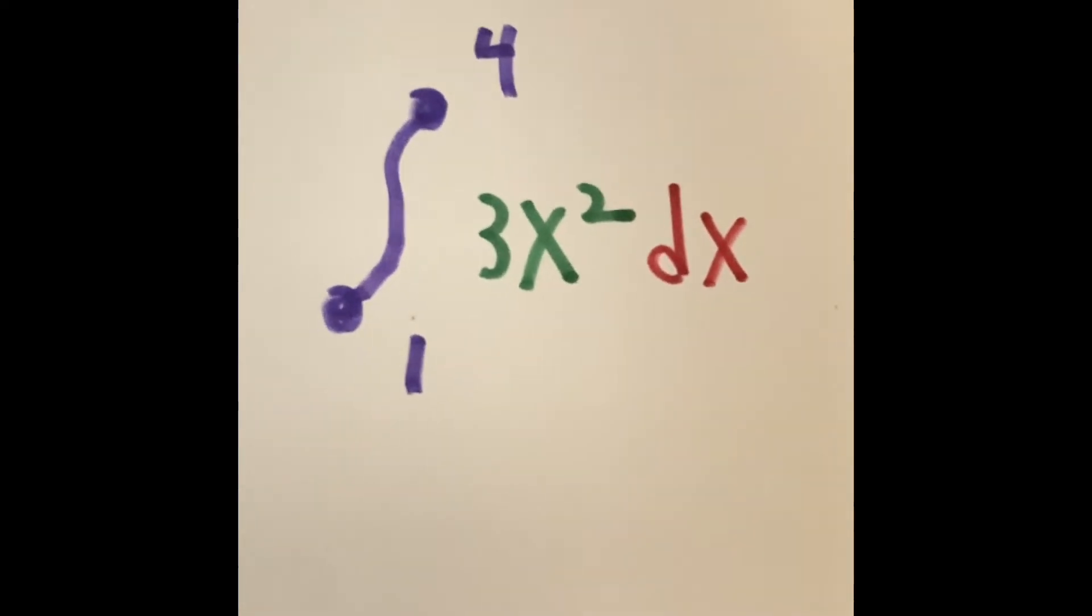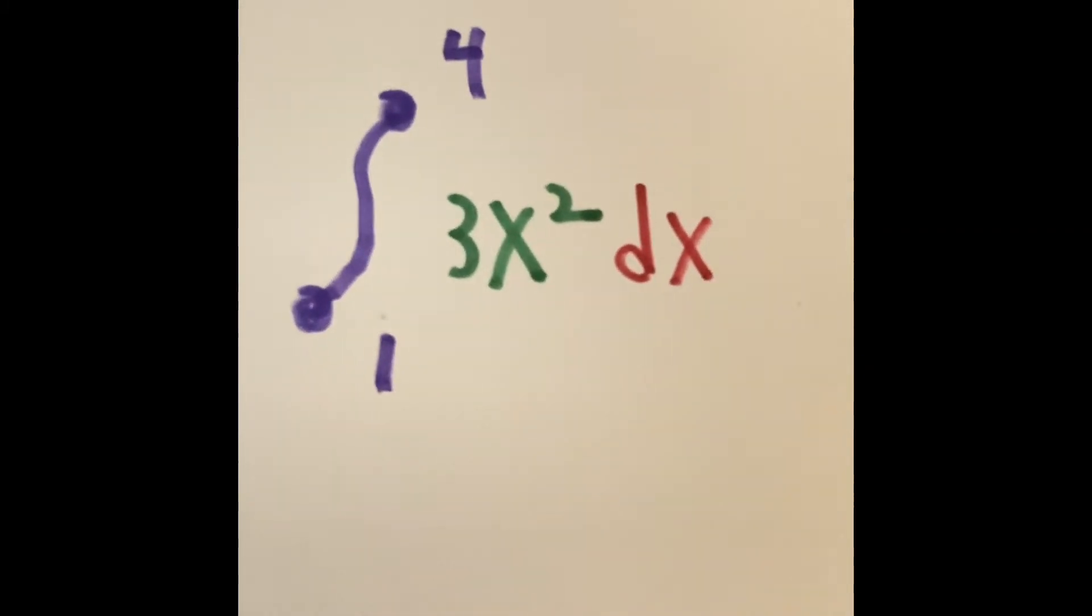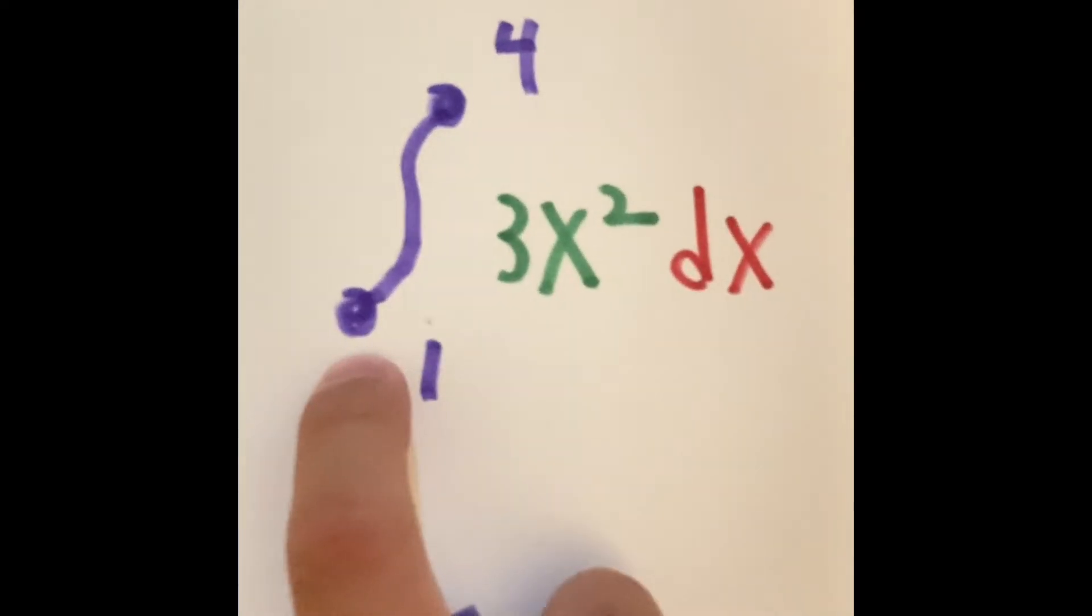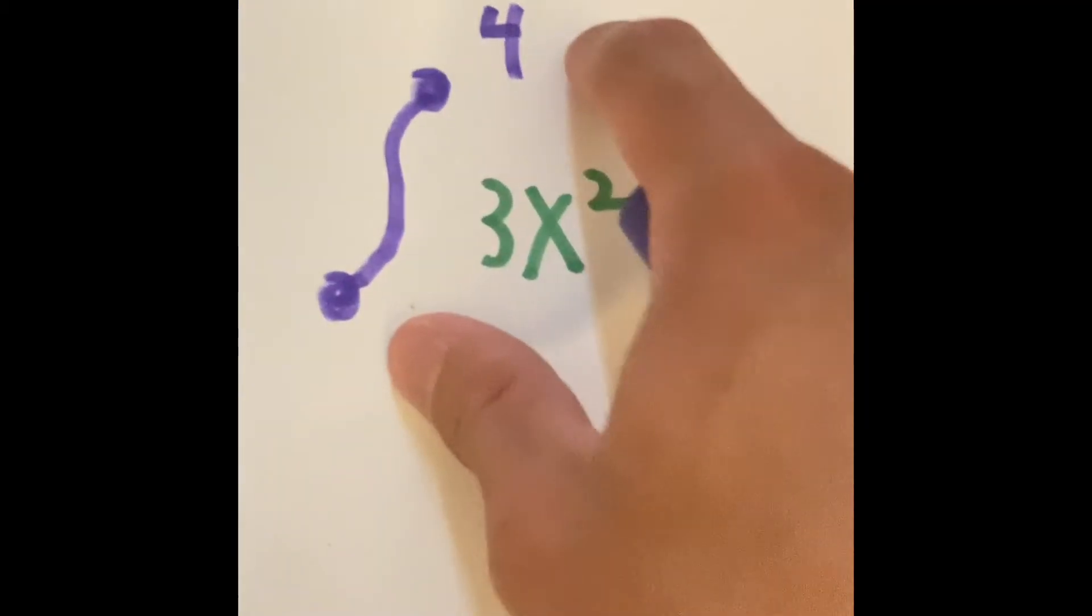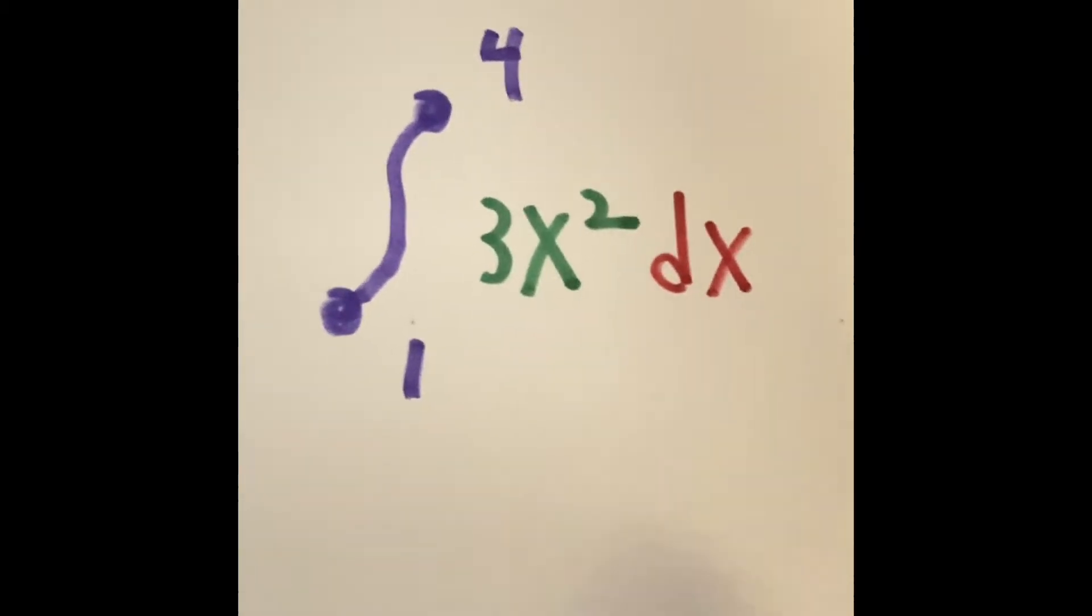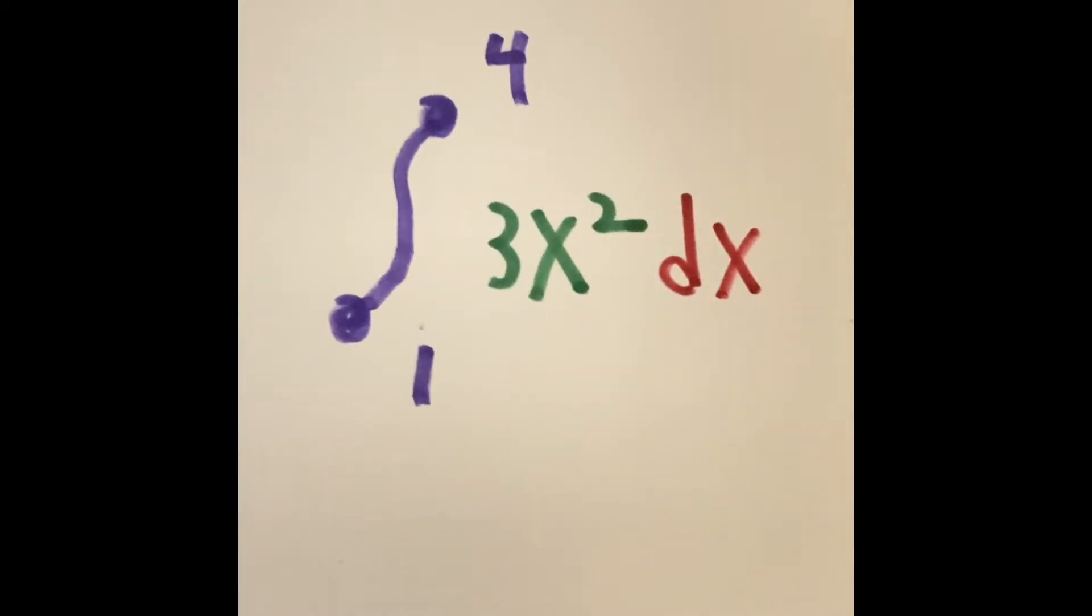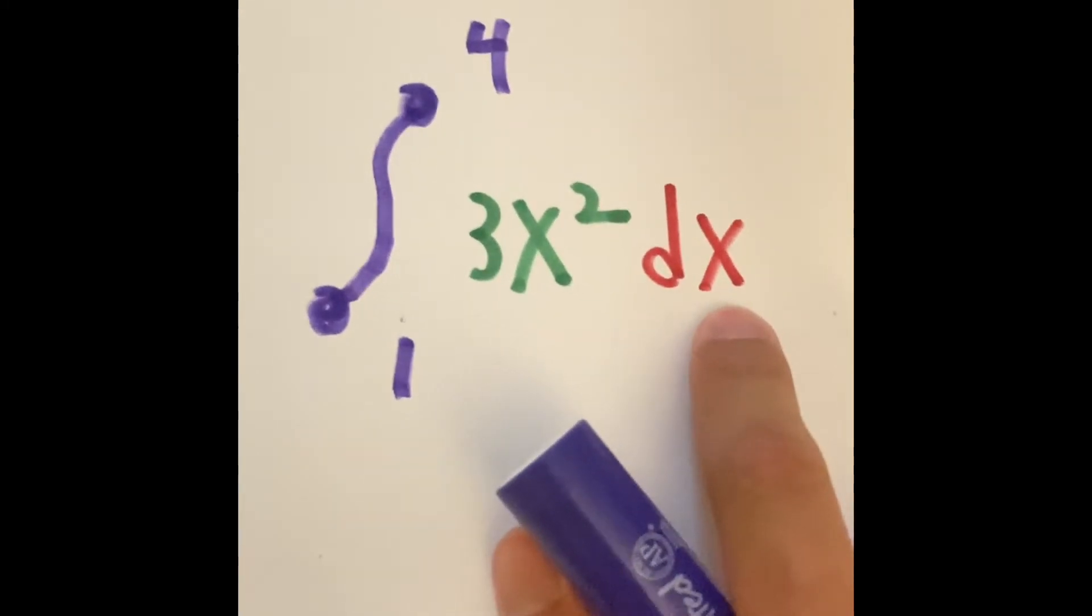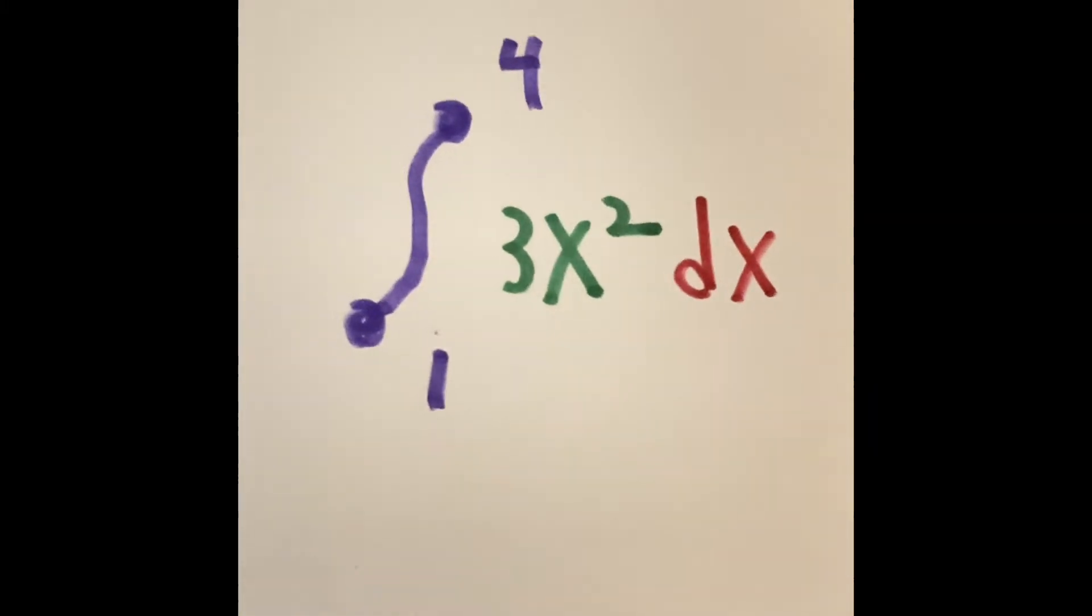But what we can do is we can solve this and get 100% accuracy to our answer. What we understand already is that the integral is limiting the shape between 1 and 4 on the x-axis. The 3x squared represents the parabola shown on the graph. And the dx represents to find the antiderivative, something we learned from the last episode.